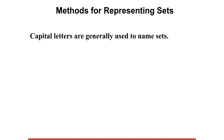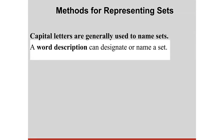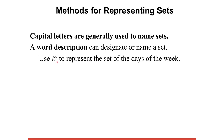We use capital letters to name sets. There are three methods commonly used to designate a set. The first is called the word description, or sometimes the descriptive method. A word description can be used to designate or name a set. For instance, we call W — capital W — to represent the set of the days of the week.